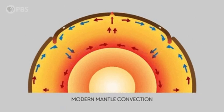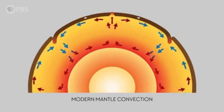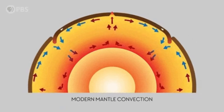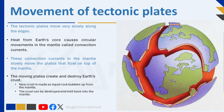Plate movements play a crucial role in shaping the Earth's surface and influencing geological events. Understanding the structure of the Earth and the movement of its crust provides a foundation for understanding various geological processes and phenomena that shape our planet's surface and impact life on Earth. The moving plates create and destroy Earth's crust. In some places new crust is made as liquid rock bubbles up from the mantle — we see this as volcanoes erupting. In other places, parts of the crust are destroyed and melt back into the mantle. So moving tectonic plates both create and destroy the Earth's crust.